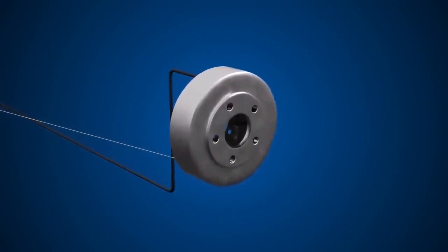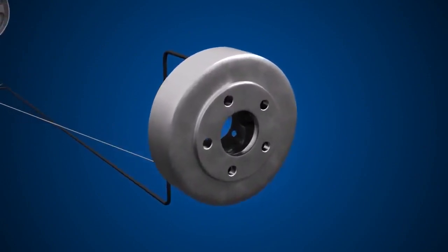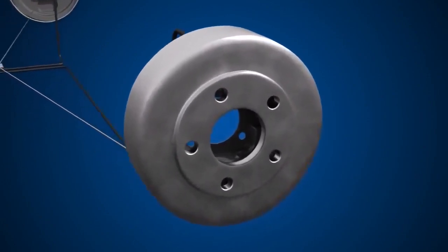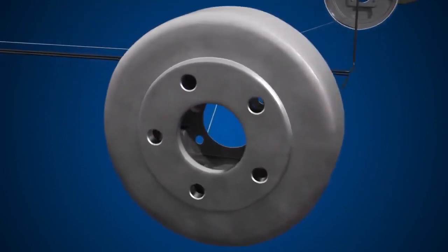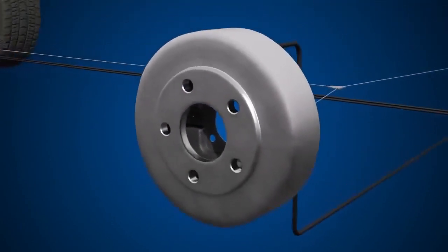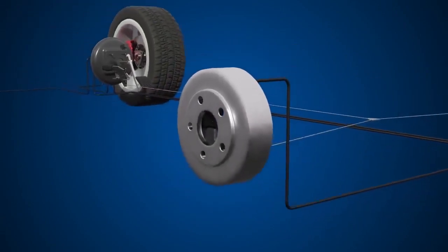Drum brakes contain brake shoes. Friction is achieved by pushing these shoes against the surface of a rotating drum. Again, the friction generated converts kinetic energy into heat, slowing the wheel.